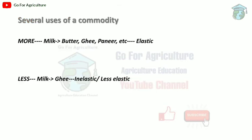The next factor is several users of a commodity. If a product has many uses, its demand will be higher. For example, milk can be used to make butter, ghee, paneer, and sweets. Over the past 2-3 years the price of a milk packet has stayed at 26 rupees, but the demand keeps increasing because it has so many uses. So products with more users are elastic.